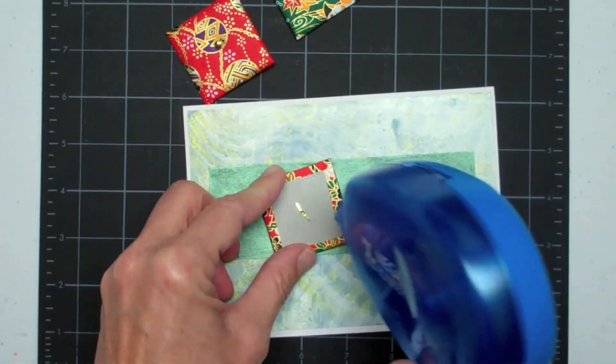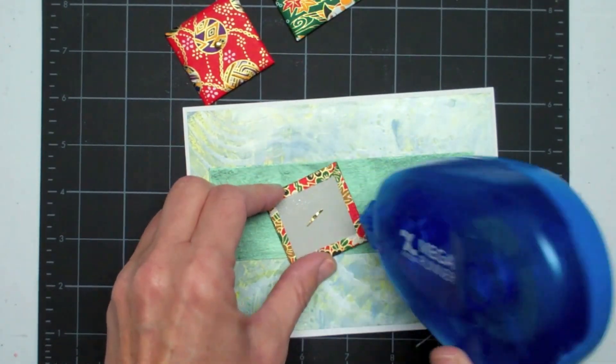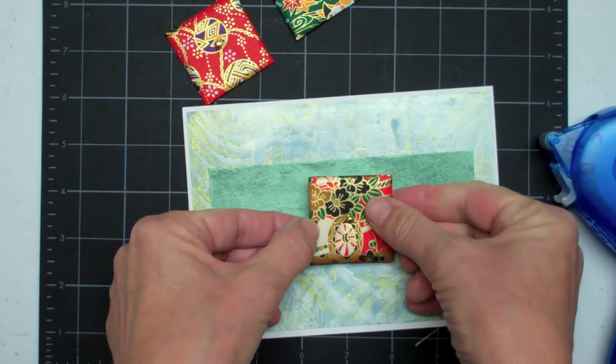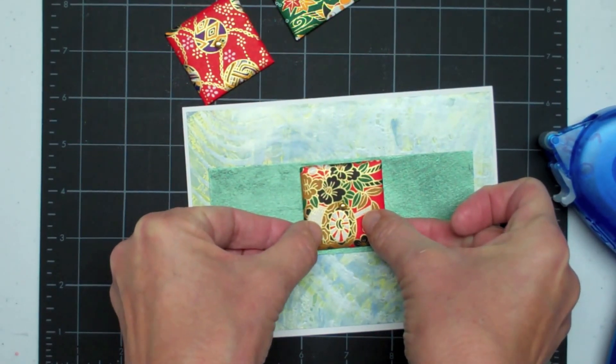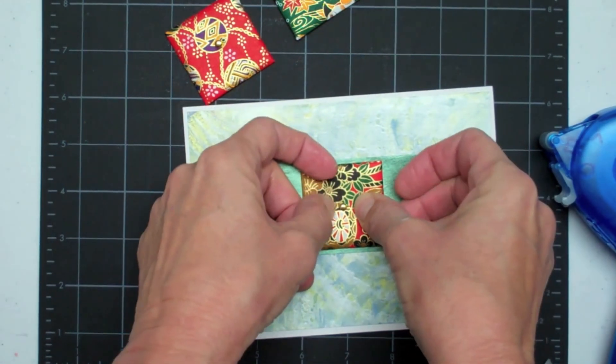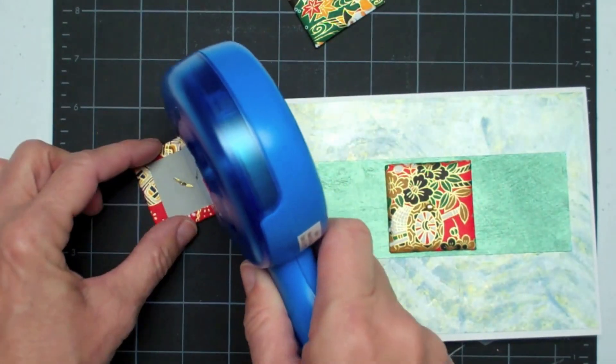I'm just going to take the adhesive and put plenty of adhesive on the back. You can overlap it, whatever you need to do. I'll just center my first one right in the middle. I'm just eyeballing it. This is permanent adhesive so once it's down it's down. You don't have a lot of time to change your mind.